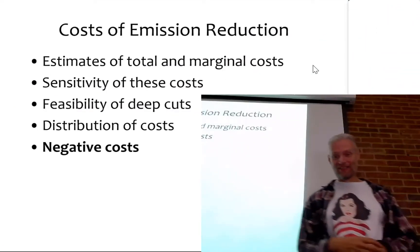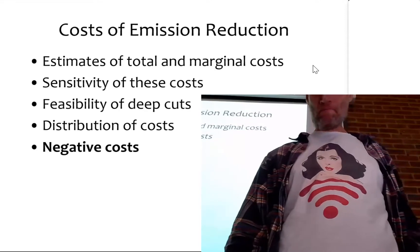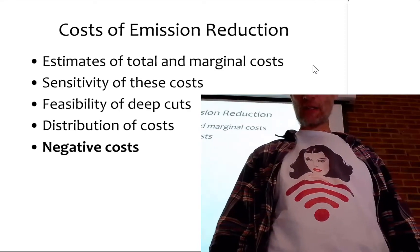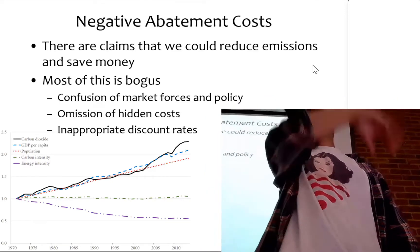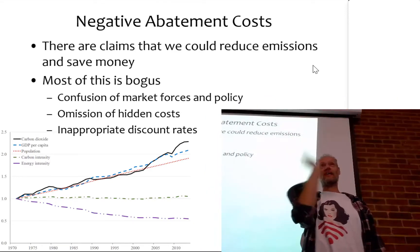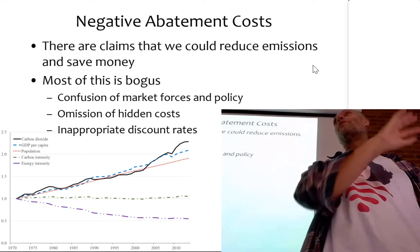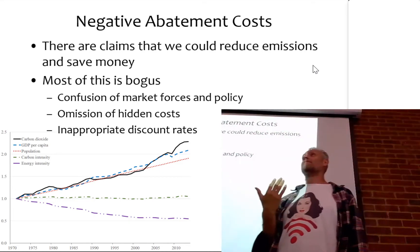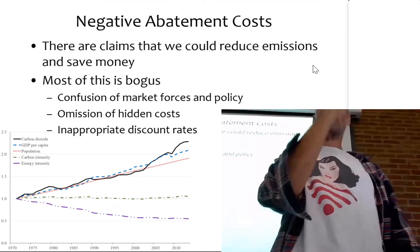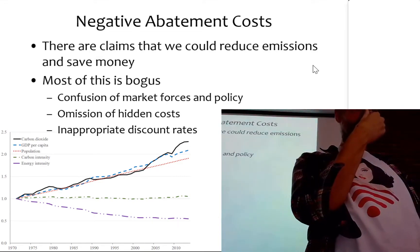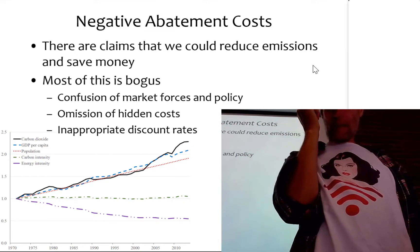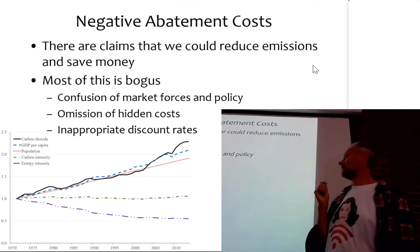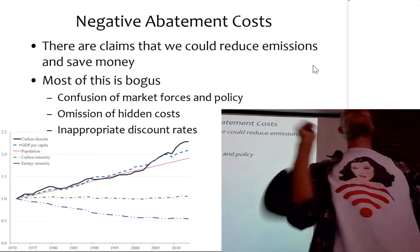The final chapter on costs is negative costs, and this gets a little technical. Last week I said if you're going to cut emissions, you impose an additional constraint on your system - you now have to pay for things that used to be free - and therefore emission reduction is going to cost money. Now, there have been persistent claims for decades that we could reduce emissions and save money at the same time.